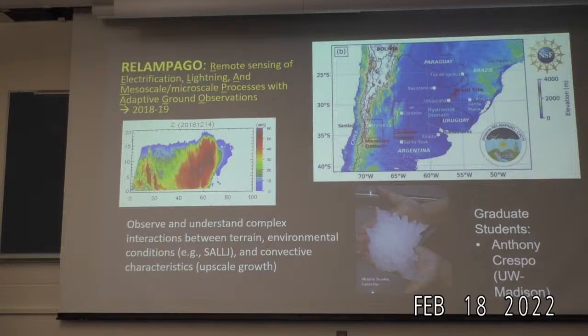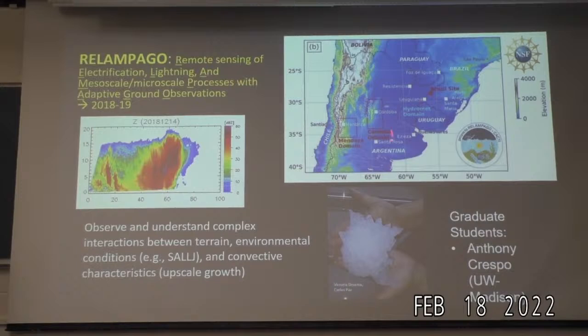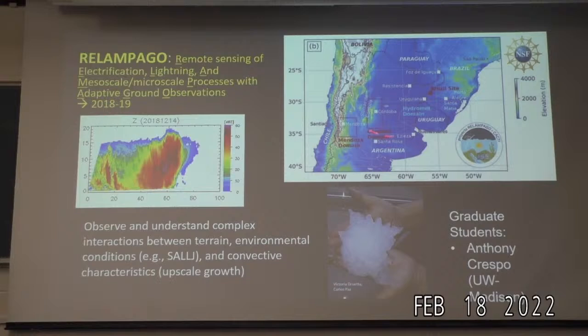I'll go through a few projects I'm working on. The first is the Argentina project. Here's the Andes in central Argentina and a small mesoscale mountain range called the Sierras de Córdoba. From satellite data and ground reports, we suspect some of the most intense storms in the world occur in this region. The question is why, and how do we do better at predicting them?